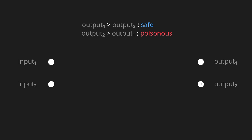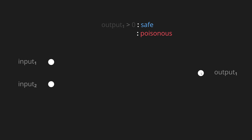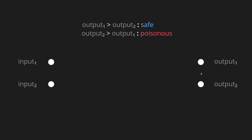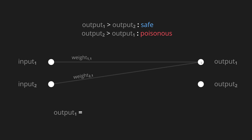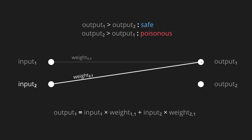You might be thinking two outputs is quite extravagant - why not just have one, and say a positive value means safe and a negative value means poisonous. We could definitely do that, but in future problems there'll be more than just two possible outcomes, so it's helpful to have a separate output for each of them. These outputs depend in some way on the inputs, so let's connect both inputs up to the first output. These connections each represent a weight for essentially how important the inputs are to that particular output. The actual value of the first output equals the first input multiplied by its connection weight, plus the second input multiplied by its connection weight, and it'll be the same story for the second output.